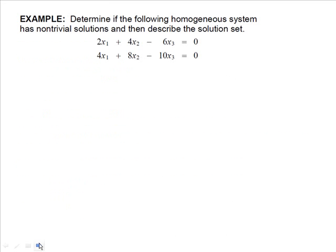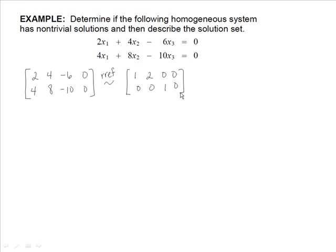Let's look at this example. We want to determine if the following homogeneous system has non-trivial solutions and then describe the solution set. We know it's homogeneous because all equations equal zero. To determine if we have non-trivial solutions, we write the augmented matrix and row reduce it. Using RREF, we end up with a matrix where x2 is free, which means yes, it does have non-trivial solutions.